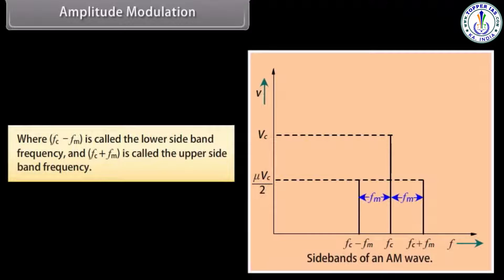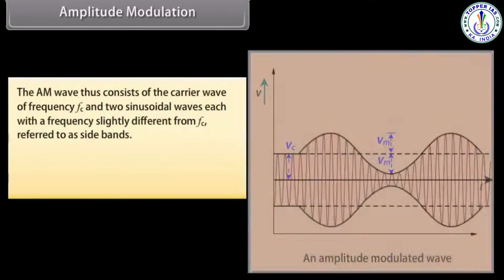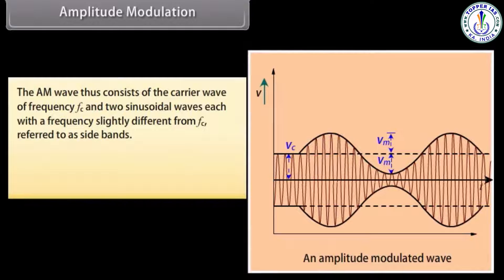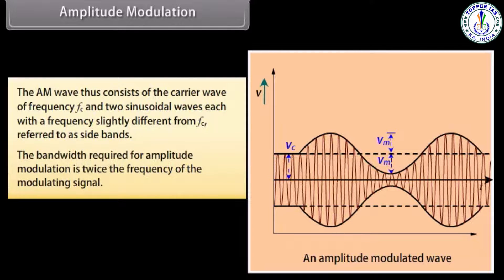Here, fc − fm is called the lower sideband frequency and fc + fm is called the upper sideband frequency. The AM wave thus consists of the carrier wave of frequency fc and two sinusoidal waves, each with a frequency slightly different from fc, referred to as sidebands. The bandwidth required for amplitude modulation is twice the frequency of the modulating signal.